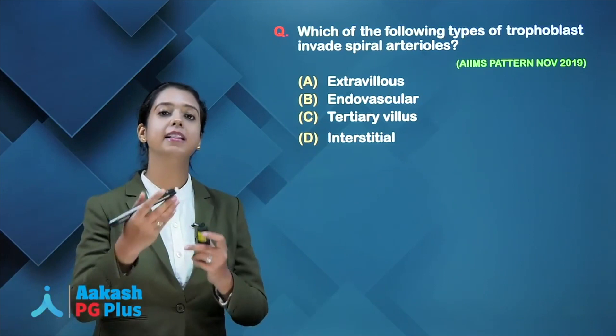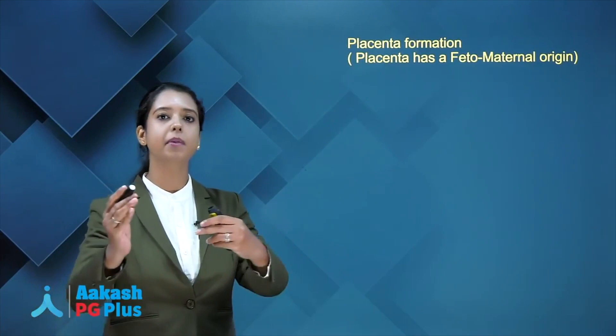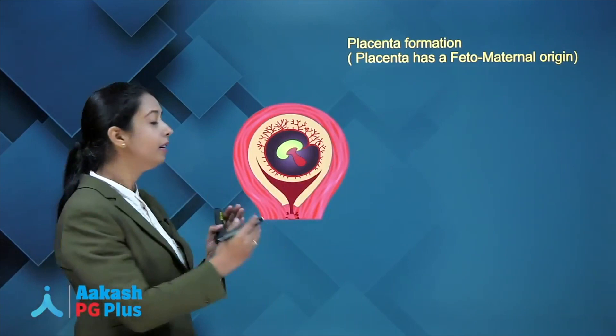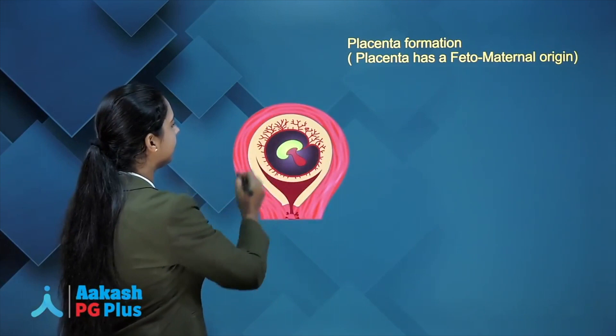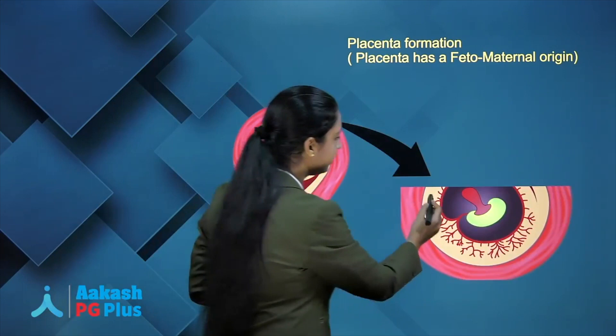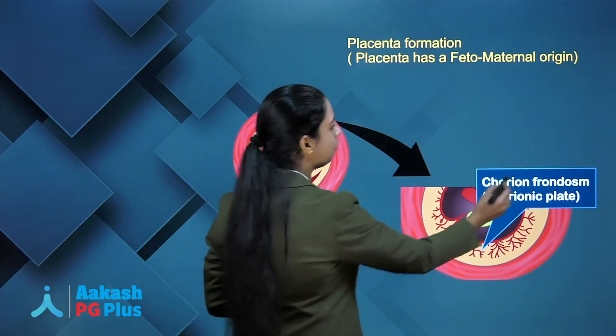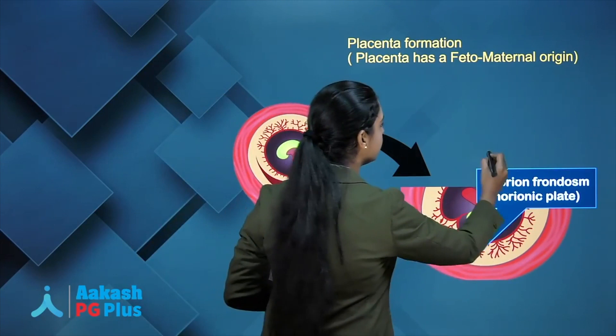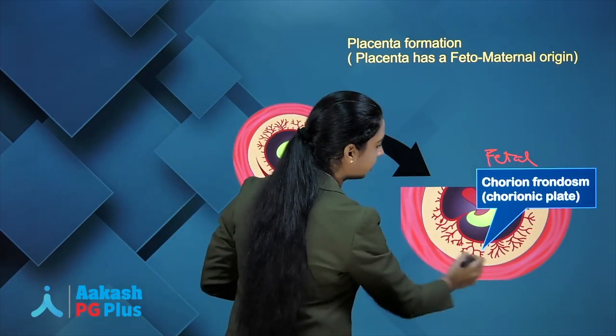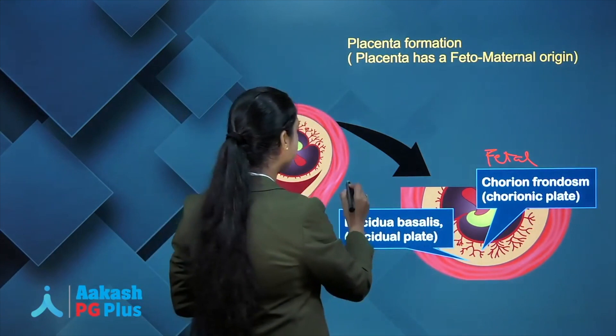Placenta has a fetomaternal origin. It means some part is from the fetus and some part is from the mother. This is basically an implanted embryo — this is the embryo, this is the placenta, and this is the uterine surface. If we zoom in, you can see the placenta which is the part of the fetus. It is called as chorion frondosum — a tree-like overgrowth, which is also called the chorionic plate, and that is actually the fetal part.